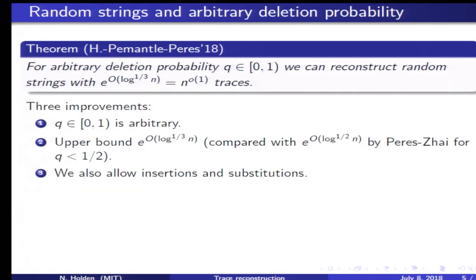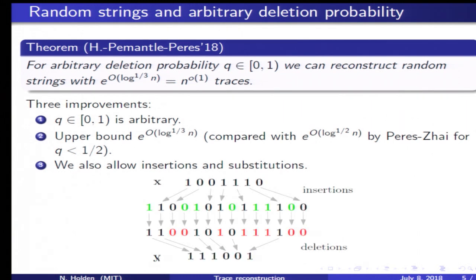Our main result improves the previous results in three ways. First, our result holds for all deletion probabilities q between 0 and 1. Second, our upper bound is e to the power q root log n, as compared to e to the power root log n, which was obtained previously for deletion probabilities less than a half.